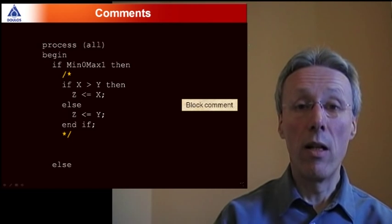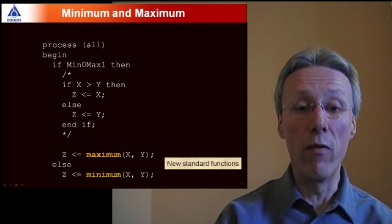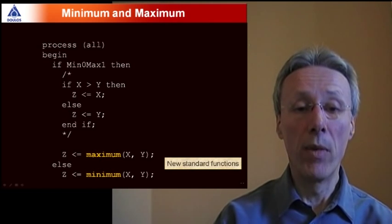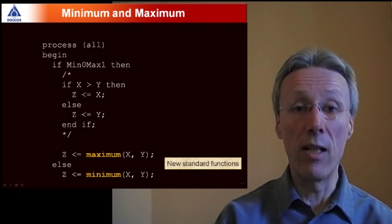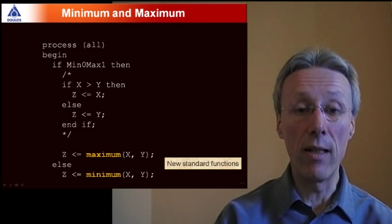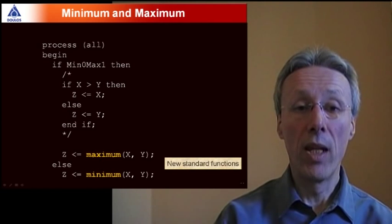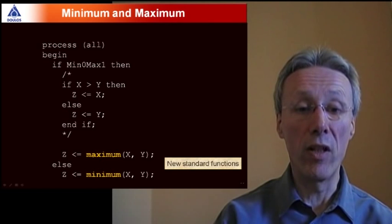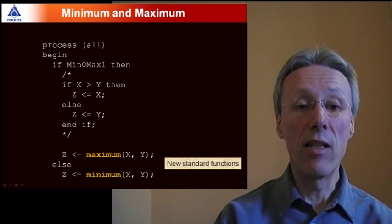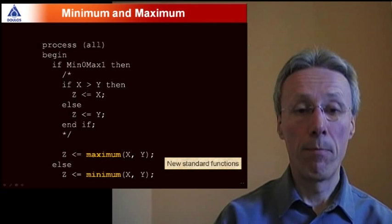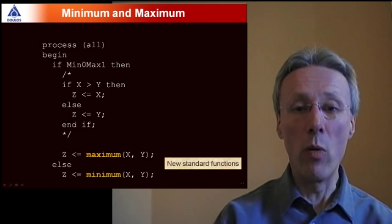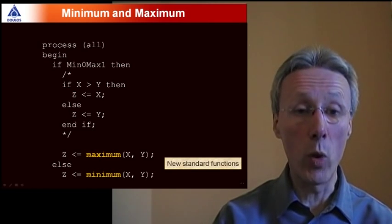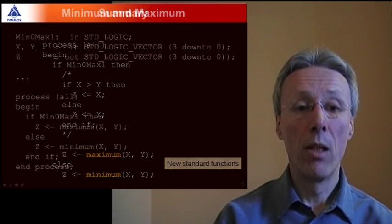So instead of the if statement, I'm going to introduce another new feature from VHDL 2008. There are some new standard functions, maximum and minimum. So maximum and minimum are defined on standard types like integers and standard logic vectors, all the types that you're likely to want to use them on. And it just so happens that this example that I've chosen requires a maximum and minimum function, so we can call maximum and minimum instead of writing the if statement. Turns out maximum and minimum each take two arguments, so you'd have to nest them if you wanted to find the maximum and minimum of more than two quantities.